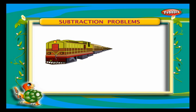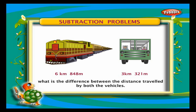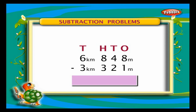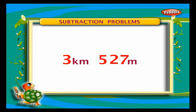Subtraction problems: A train travels a distance of 6 kilometers and 848 meters, and a bus travels a distance of 3 kilometers and 321 meters. What is the difference between the distances traveled by both vehicles? Arrange them in a column. Subtracting ones — we get 7. Subtracting tens — we get 2. Subtracting hundreds — we get 5. Subtracting thousands — we get 3. The difference is 3 kilometers and 527 meters.